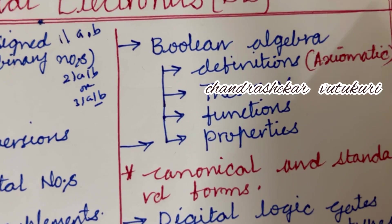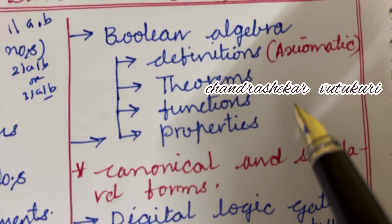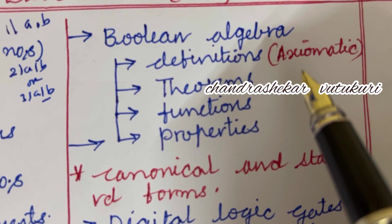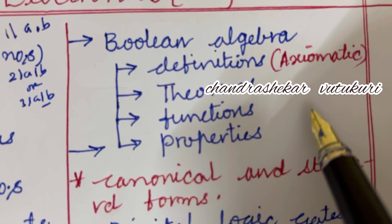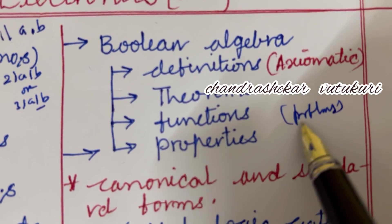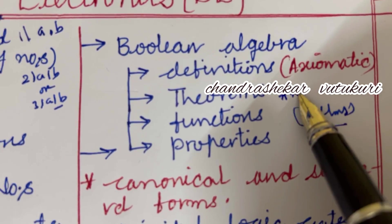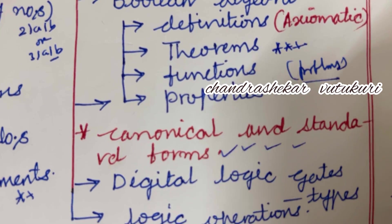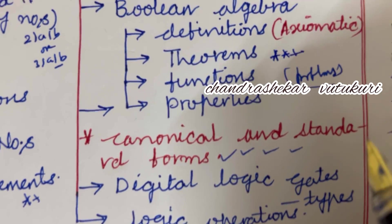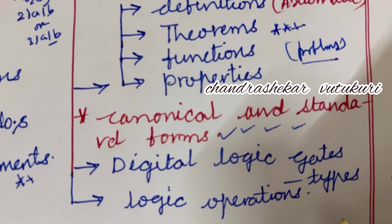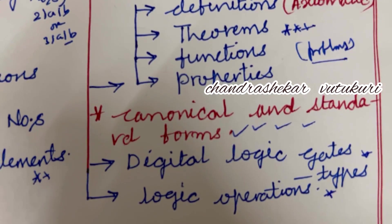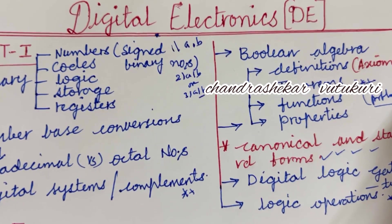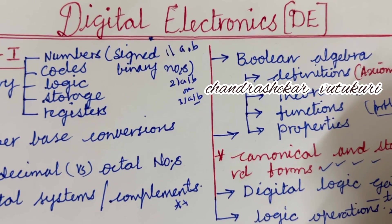Moving to Boolean algebra, which may be the third question — it covers definitions, theorems, functions, and properties, as well as problems. These need to be worked out very neatly. Canonical and standard form is set to be a key question this time, appearing as question 3a or 3b. Digital logic gates may be a short question, and logical operations may also be a short or 5-mark question — do not skip any of these concepts.